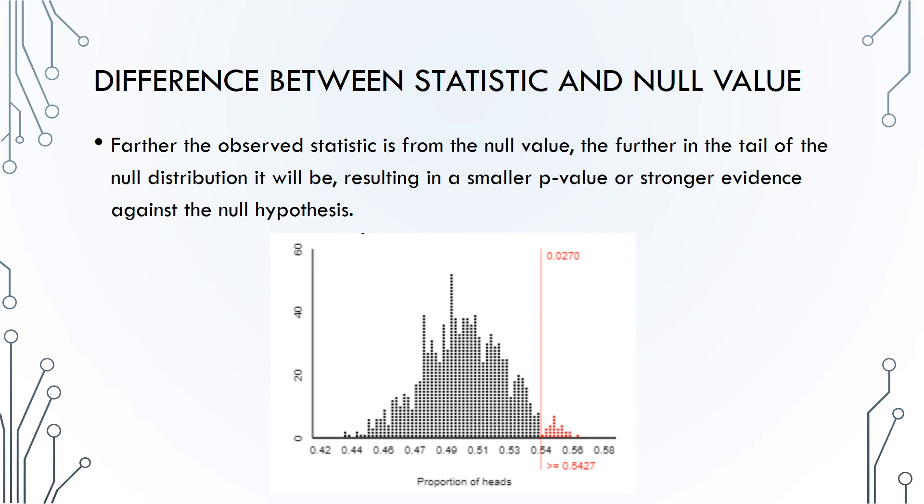If the observed statistic was 253 out of 457, or 0.554, a value even further from the null of 0.5, there are now only 9 out of 1,000 dots at least that extreme, so our p-value drops to 0.009. The farther the observed statistic is from the null value, the further in the tail of the null distribution it will be, resulting in a smaller p-value or stronger evidence against the null hypothesis.